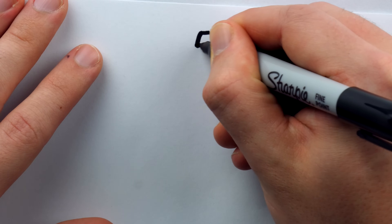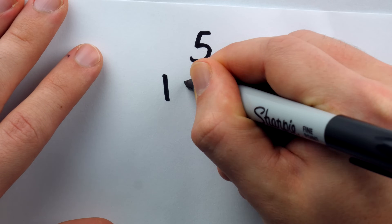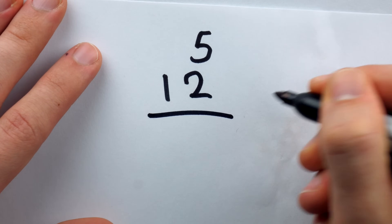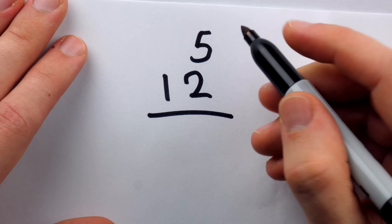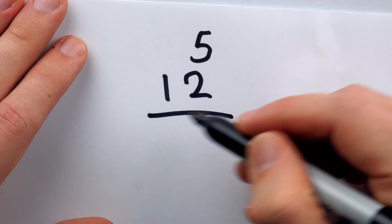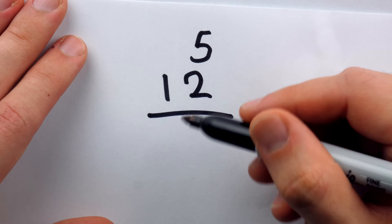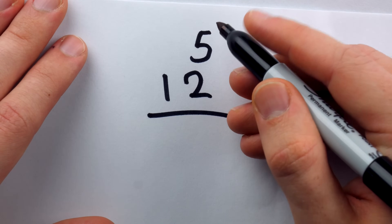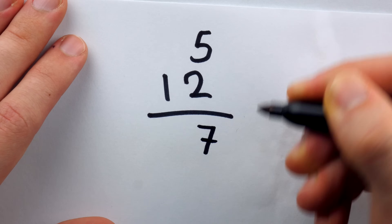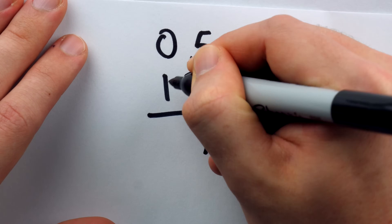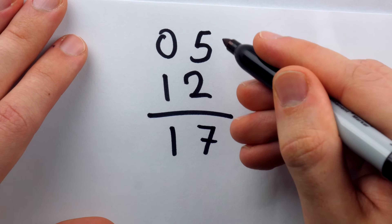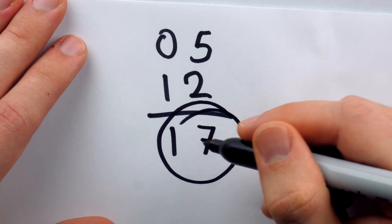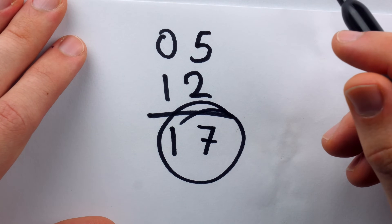For example, this may be written as an elementary problem for a school student to perform. There is no plus sign, but it's understood just by the form of the numbers that the student is expected to add. Five plus two is seven, and zero plus one is one, and so we see that five plus twelve is seventeen — without having a plus sign anywhere.